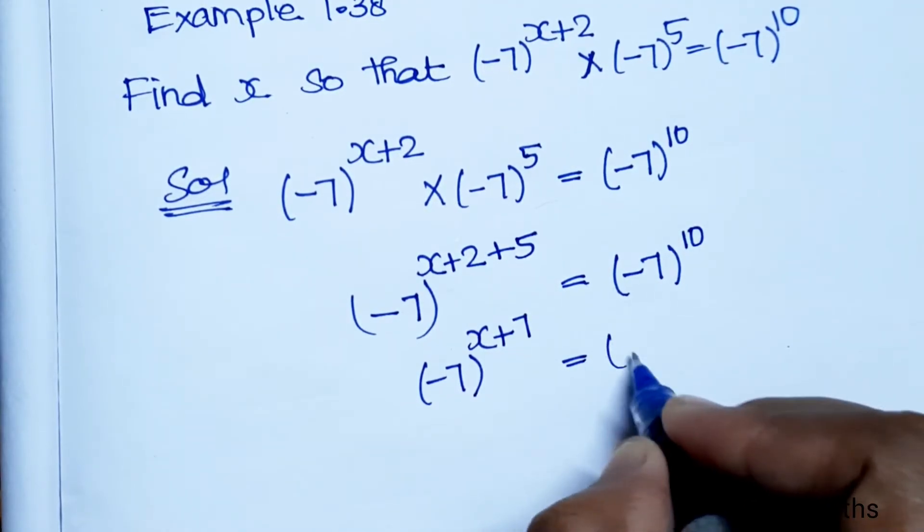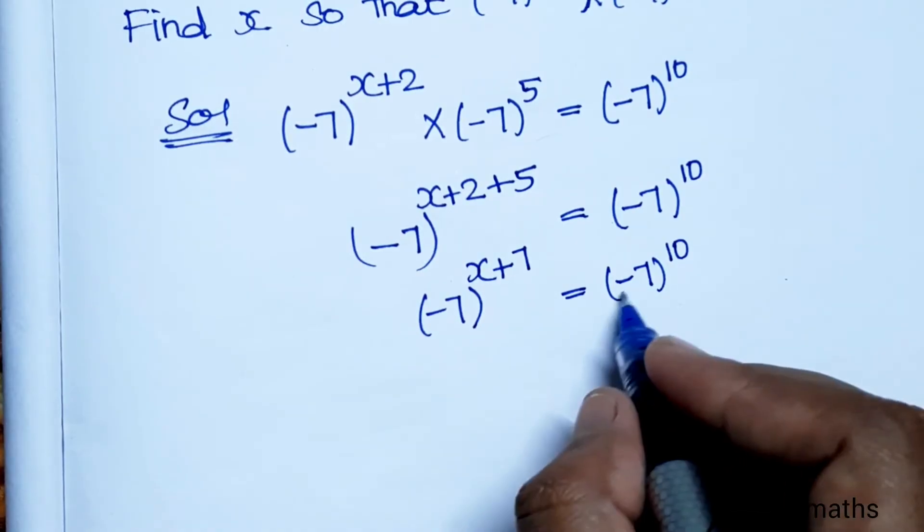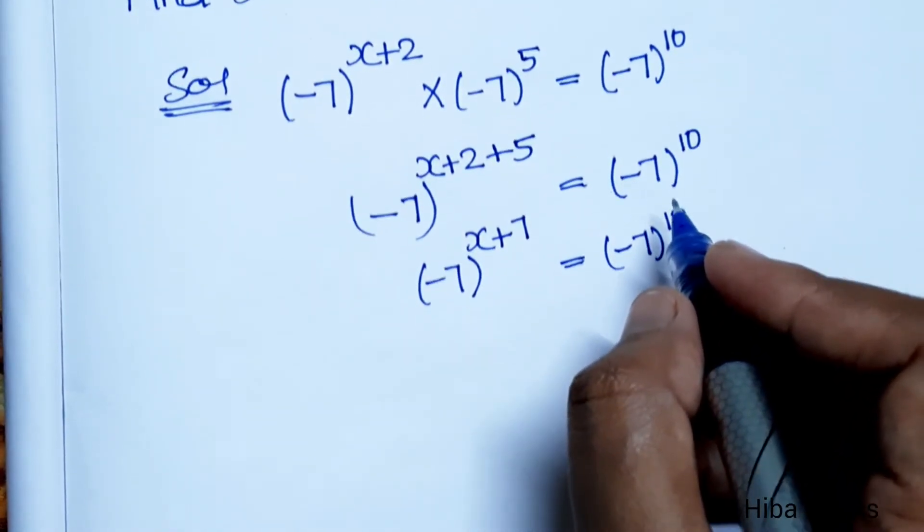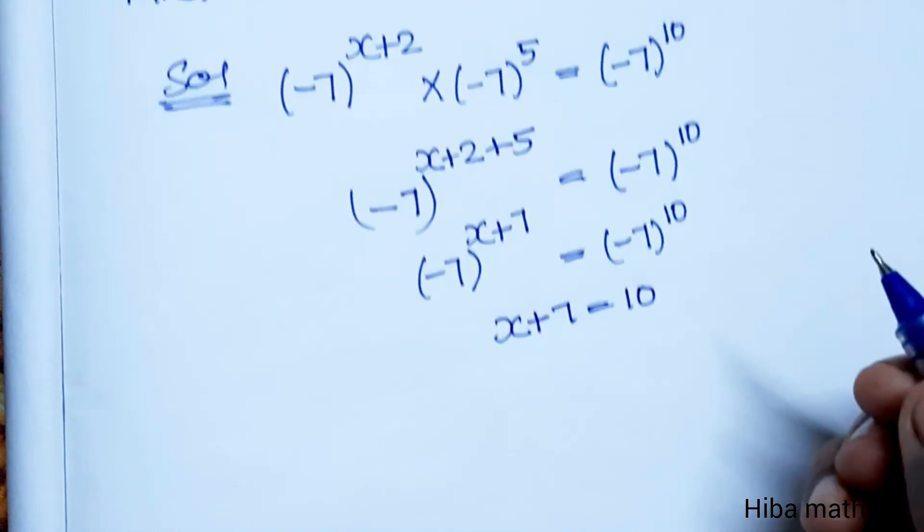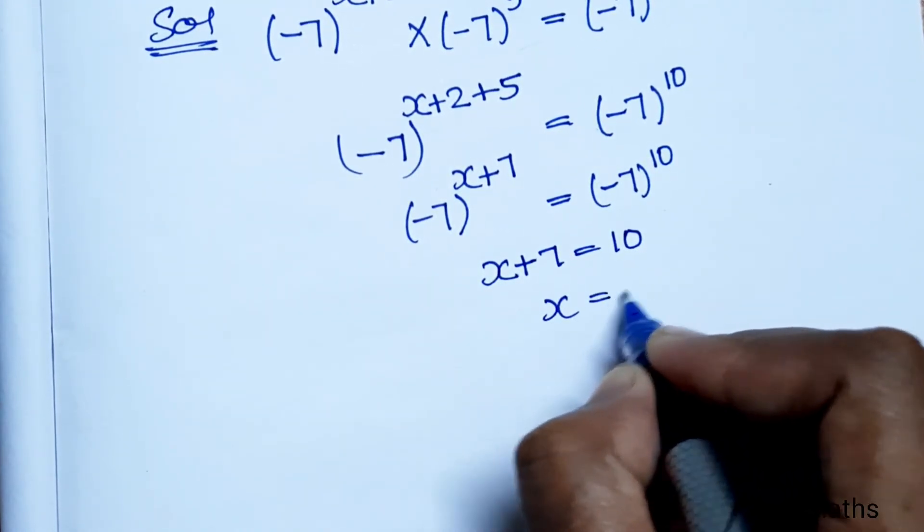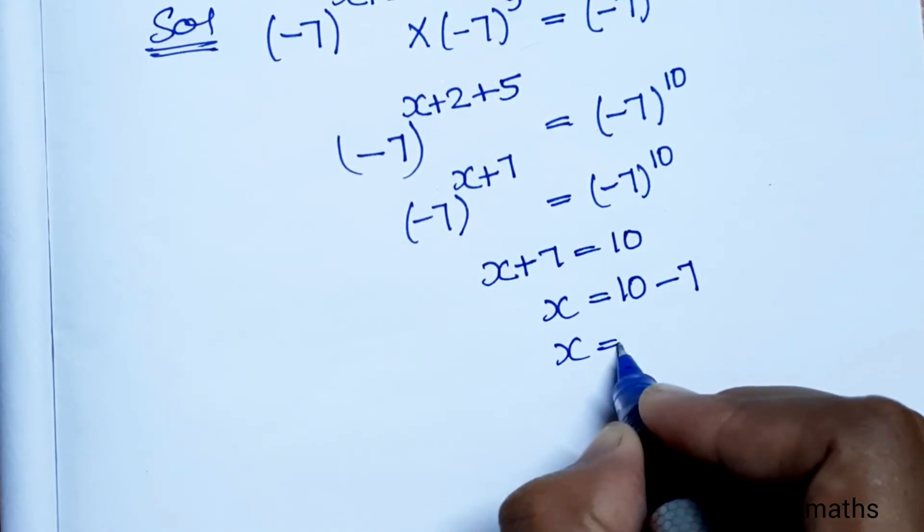So base 2 equal to, power is equal to x + 7 is equal to 10. Then x is equal to 10, plus 7 other side of minus 7. So x value is equal to 10 minus 7 is equal to...